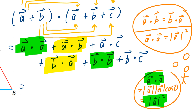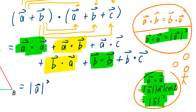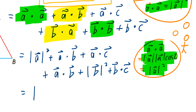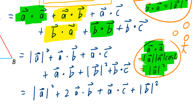Going back to our expansion: a dot a and b dot b apply the self-dot property. So we have the magnitude of a squared, plus a dot b, plus a dot c. Then b dot a becomes a dot b by the commutative law, and b dot b is the magnitude of vector b squared, plus b dot c. Collecting like terms: magnitude of a squared plus 2 times (vector a dotted to vector b), plus (a dotted to c), plus magnitude of vector b squared, plus vector b dotted to vector c.